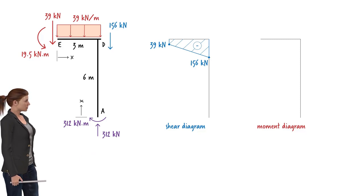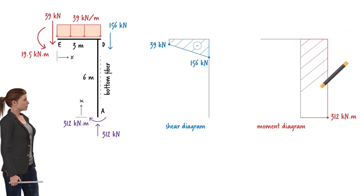Now let's draw the moment diagram for the segment. For the column, we know the value of bending moment at A. If we label this side of the column as its bottom fiber, the bending moment at A causes the member to bend concave up. According to our beam sign convention, a concave up deflection implies a positive moment. So at end A, moment is positive. It has a magnitude of 312 kNm. Furthermore, since there is no shear force in the member, bending moment remains constant throughout the column. So here is the moment diagram for column AD.